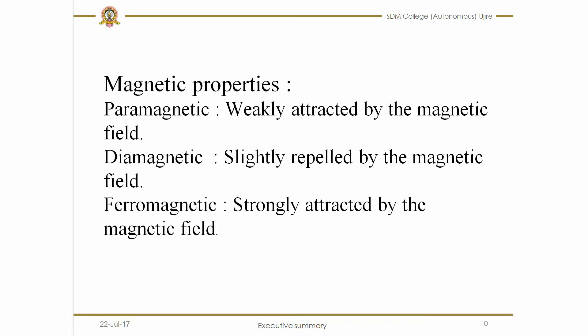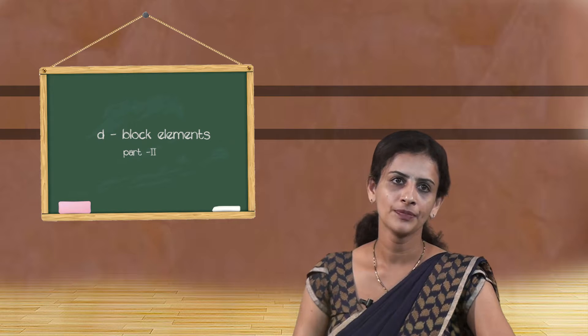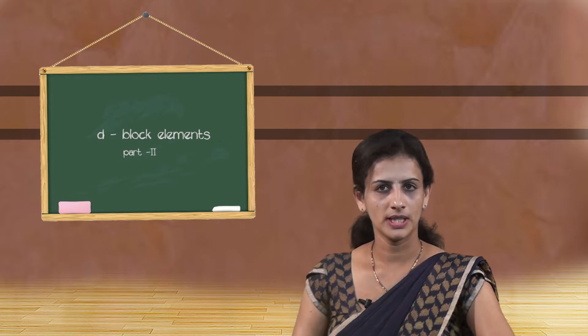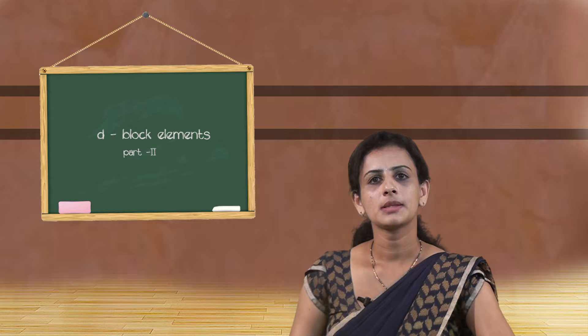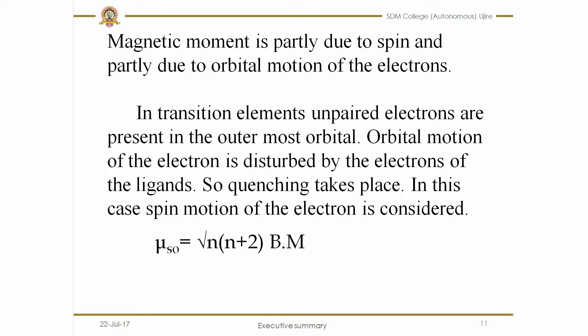The magnetic moment is partly due to the spin and orbital motion of the electrons. But in the case of transition elements, the unpaired electrons are present in the outermost orbitals, so the orbital motion of these electrons is disturbed by the electrons of the ligands, and quenching takes place. In this case, only spin motion is considered. Therefore, the magnetic moment is calculated using the spin-only formula: root of n(n+2) Bohr magnetons.